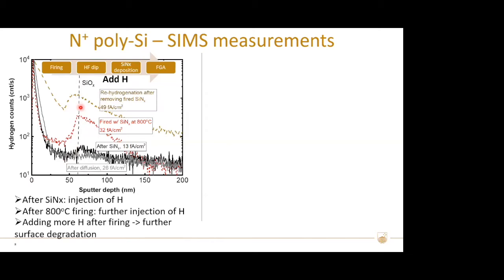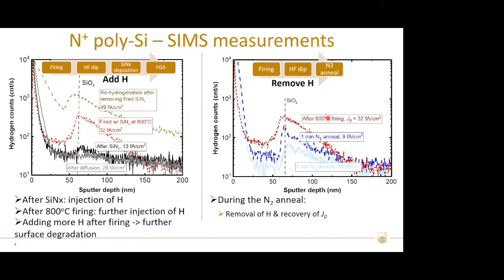We also removed hydrogen from the fired poly by 300°C annealing after removing the fired nitride films. After one minute of nitrogen annealing, the hydrogen content near the oxide reduced — you can see it changes from the red curve to the blue one — and the degraded J0 was recovered. After an additional seven-minute annealing, the hydrogen level further reduced and the J0 degraded again.